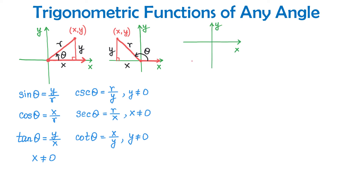Now let's draw an angle in quadrant 3. We plot a point where both x and y are negative, and draw the angle in standard position with the initial side on the x-axis and the terminal side passing through this point. This angle is between 180 and 270 degrees. Forming the right triangle by drawing the perpendicular to the x-axis: x is negative, y is negative, and R is always positive. Because both x and y are negative, some trigonometric functions will be positive and some will be negative.